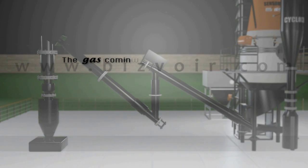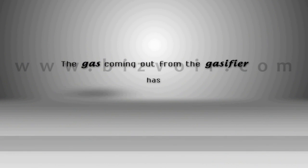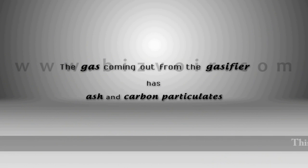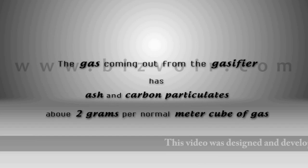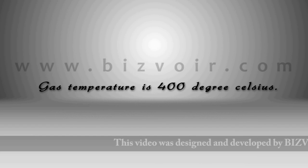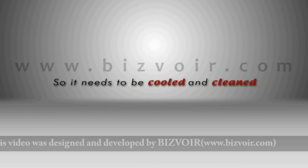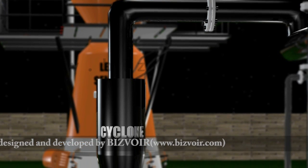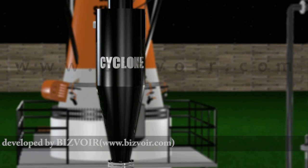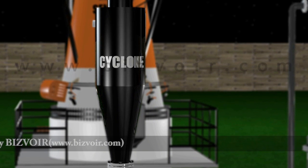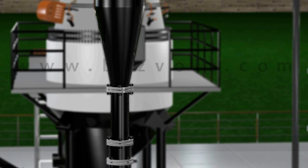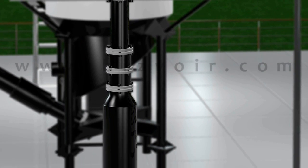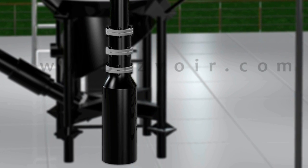The gas coming out from the gasifier has ash and carbon particulates to the tune of above 2 grams per normal meter cube of gas, and is at above 400 degrees Celsius. Thus, the gas needs to be cooled and cleaned. The gas is first passed through a cyclone separator, where fine ash is separated from the gas. These ash particles are collected in the dust collector placed at the bottom of the cyclone separator.